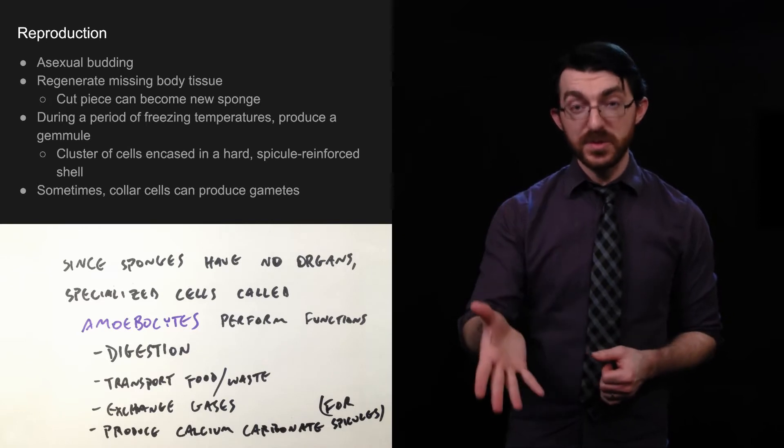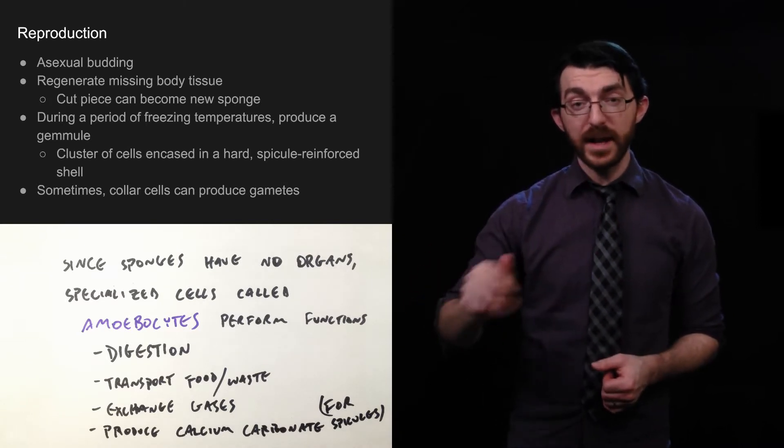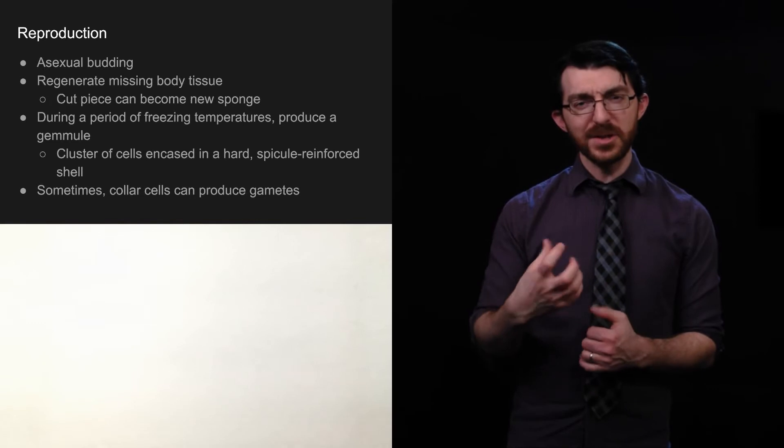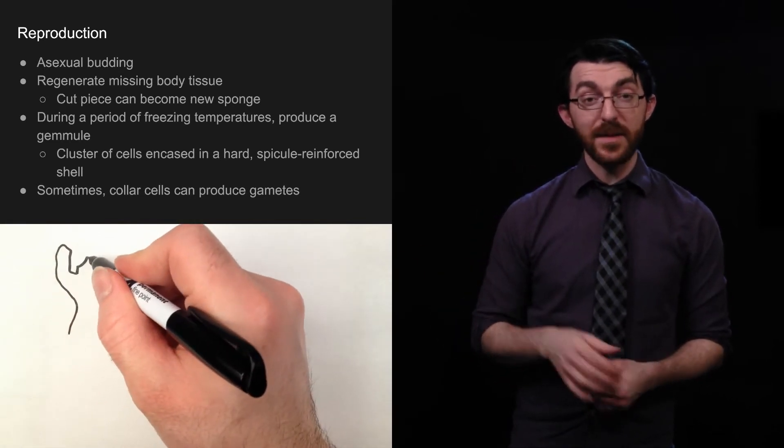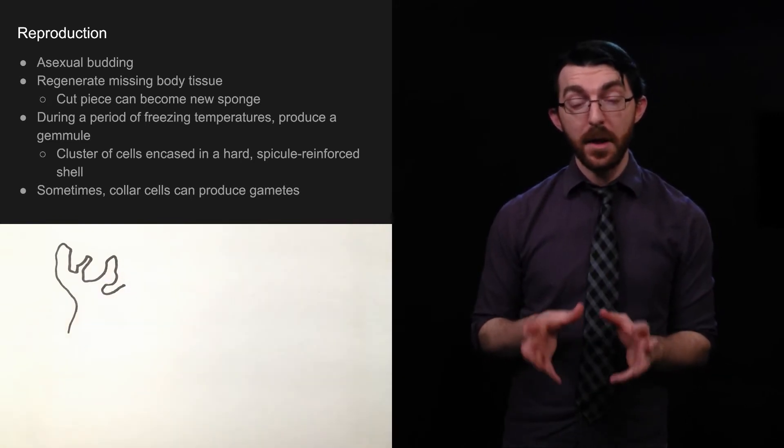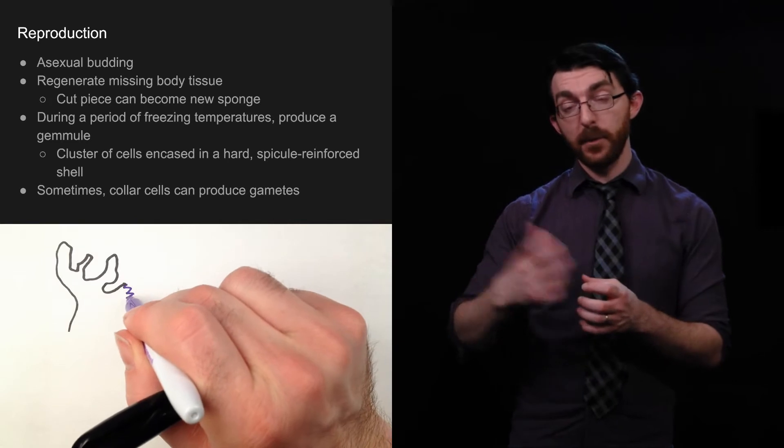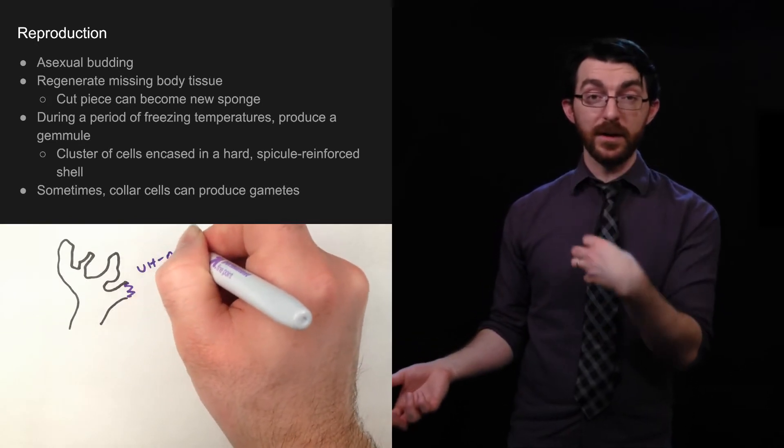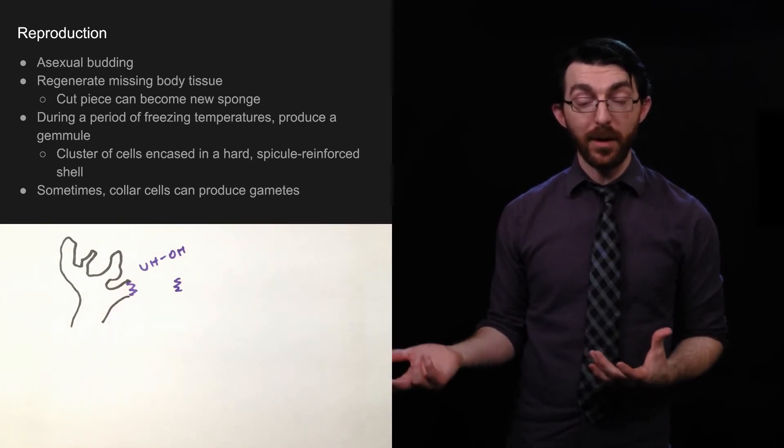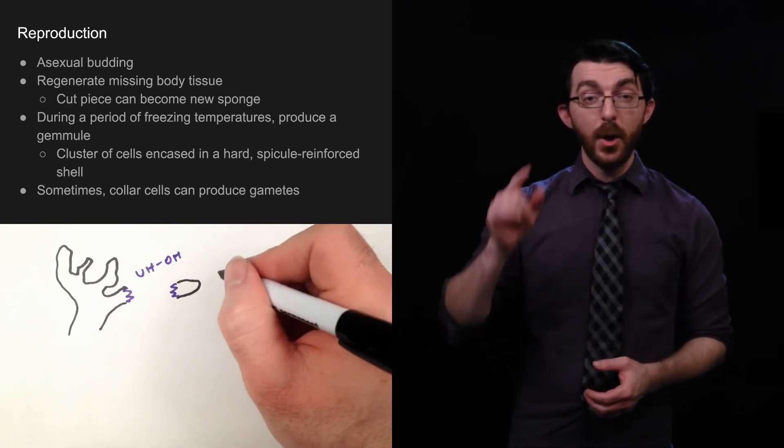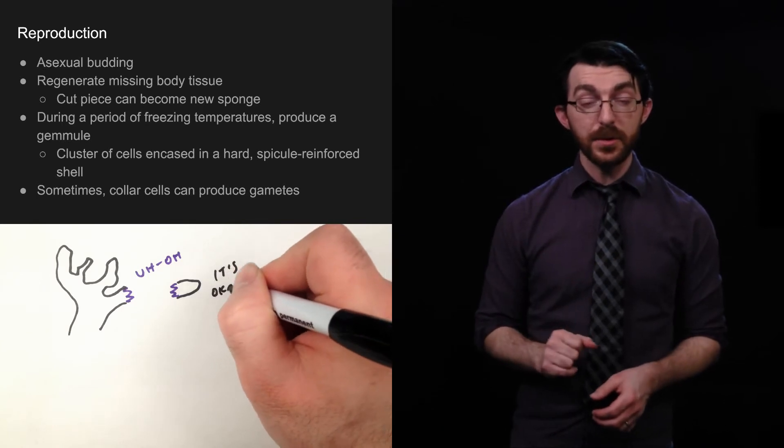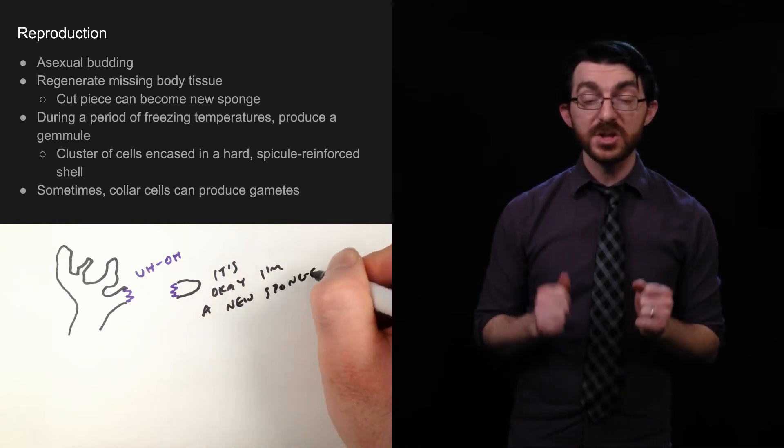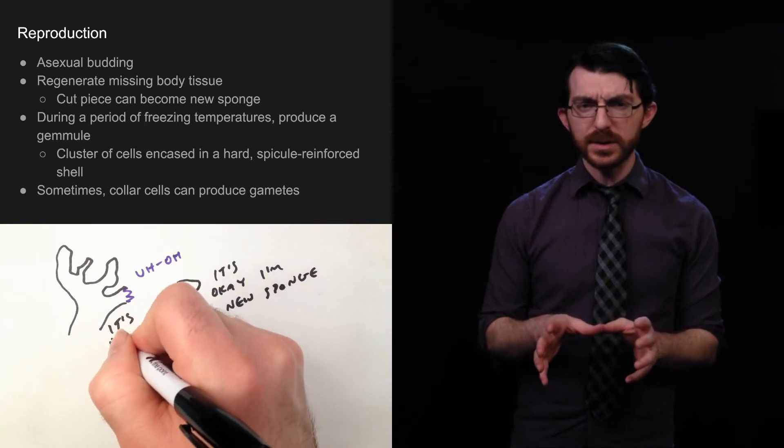So, when a sponge is reproducing, it's got a couple different ways that it can do that. One way that it can do is with asexual budding. That's where a sponge can basically grow out of a pre-existing sponge, and that's related to the next point, which is they can regenerate missing body tissue. So, let's say like a piece of a sponge breaks off. Well, that broken piece can become its own sponge, and the sponge that had a piece broken off can grow to heal and replace what broke off. So, that's another way to get two sponges when you used to have just one. During a period of freezing temperatures, they can produce what is called a gemmule. This is a cluster of cells that is encased in a hard, spicule-reinforced shell. It might kind of remind you of endospores from the bacteria unit.